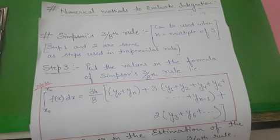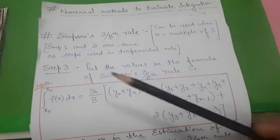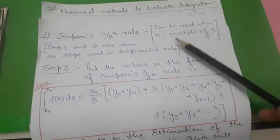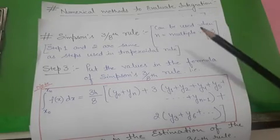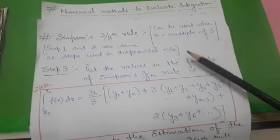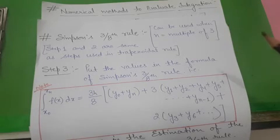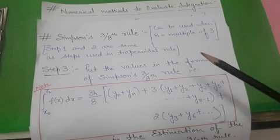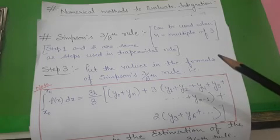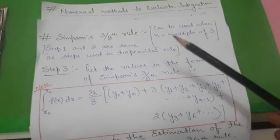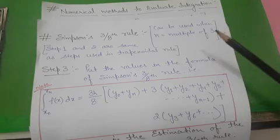The first and most important thing to remember while solving an integration with Simpson's 3/8 rule is that the number of intervals must be a multiple of three. You can construct 3, 6, 9 intervals, but whatever number of intervals you choose, it must be a multiple of three.